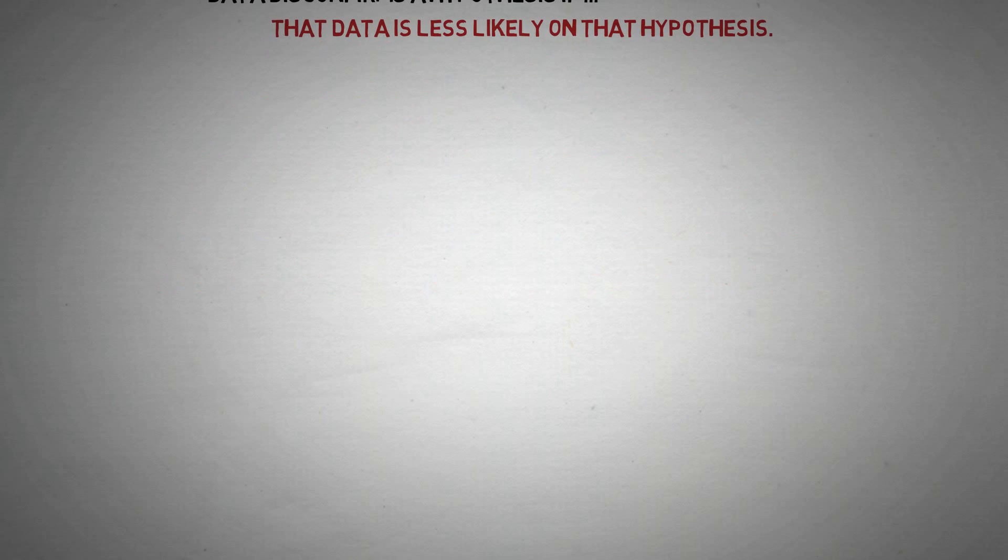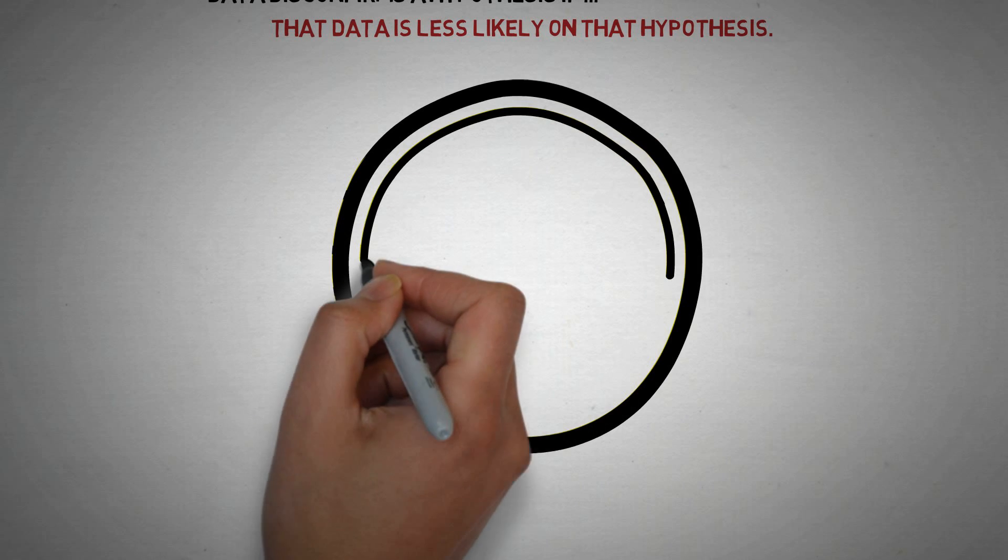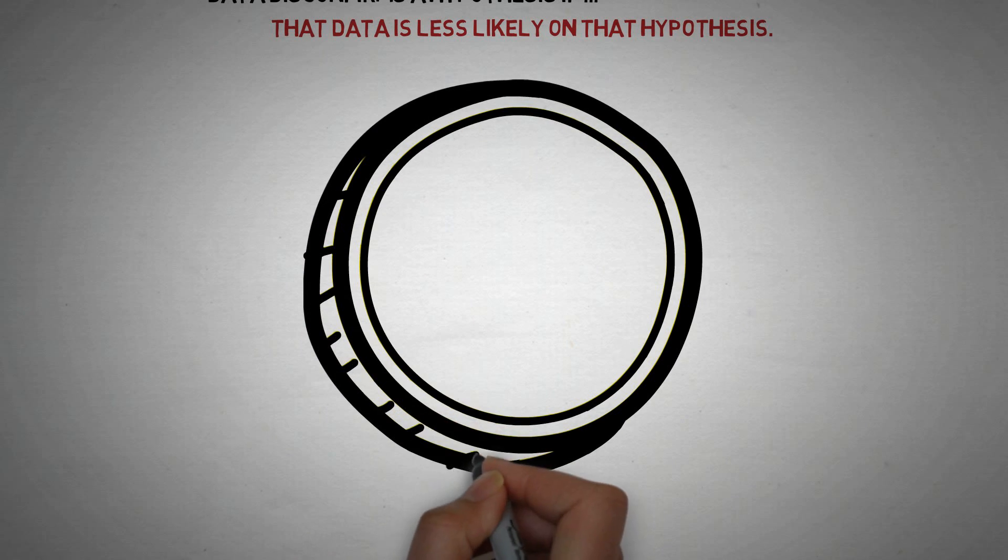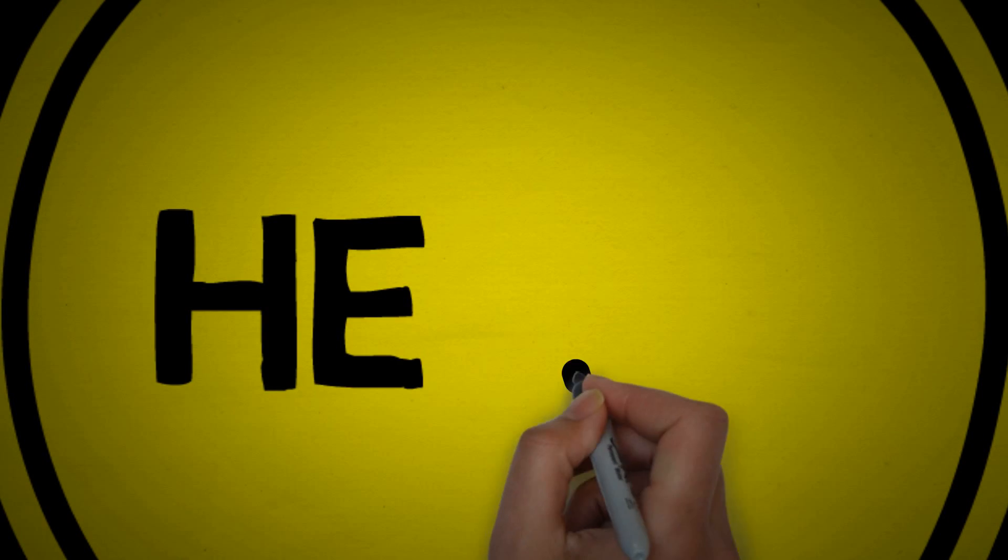For example, when you see a coin come up heads 100 times in a row, you have data that disconfirms the fair coin hypothesis. Because your observation of persistent heads is less likely on the fair coin hypothesis than on some other hypothesis, such as that the coin is heads on both sides.